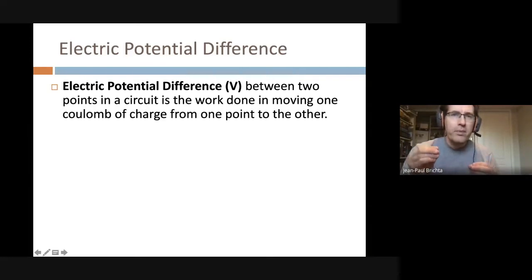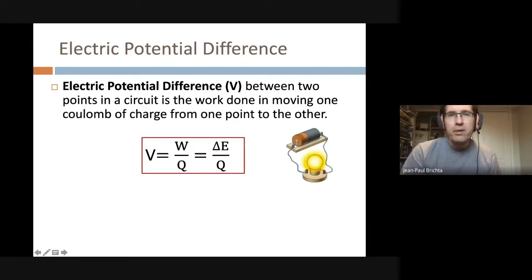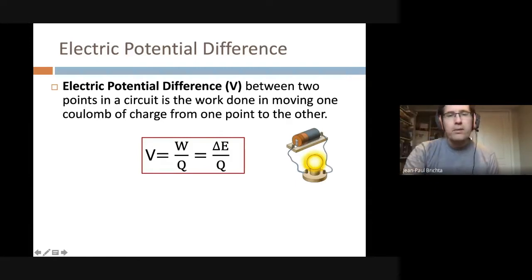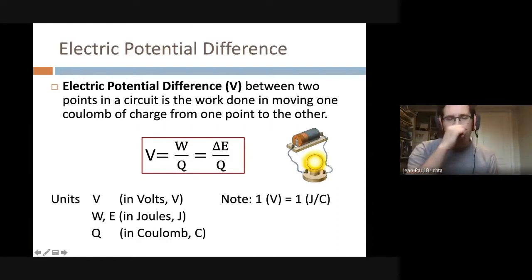That potential difference is known as voltage. The voltage is what we care about: it represents the difference in potential energy, or how much work must be done to move a charge from one spot to another. The definition is: voltage equals work required per unit charge, or the change in electric energy divided by the charge.